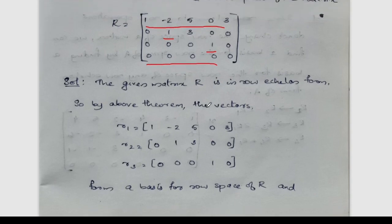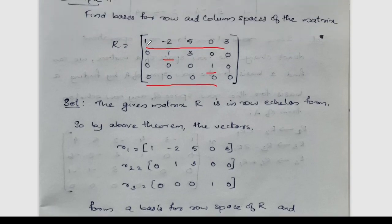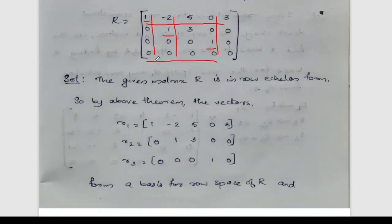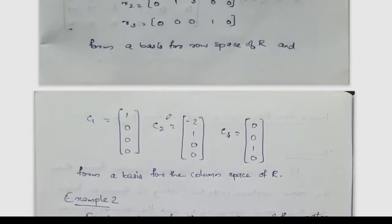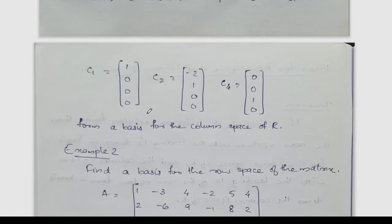For the column space, we identify columns with leading ones. The first column C1 has the leading one of the first row. The second column has the leading one of the second row. These three columns — C1, C2, and C4 — form a basis for the column space.